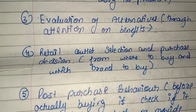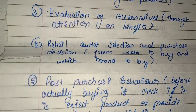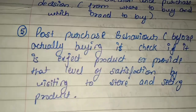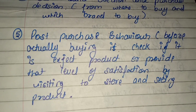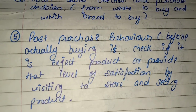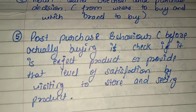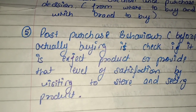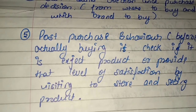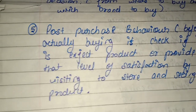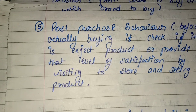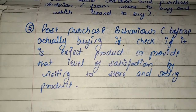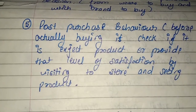After evaluating all the information and deciding on a product, the next stage is post-purchase behavior. Post-purchase behavior means checking, before actually buying, whether the product provides the expected level of satisfaction by visiting the store and seeing the product. When purchasing online, we receive the product directly, but if we go to a retail shop and check a particular product, that is post-purchase behavior — where we take the product and check whether it matches our satisfaction.